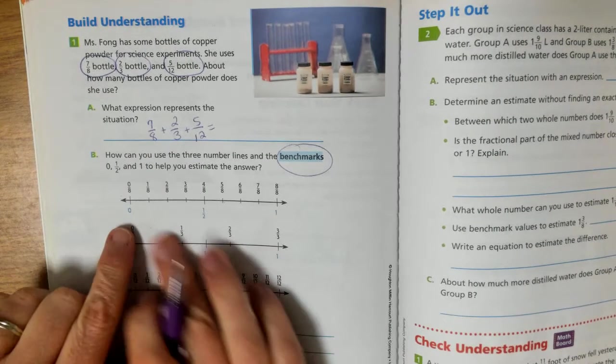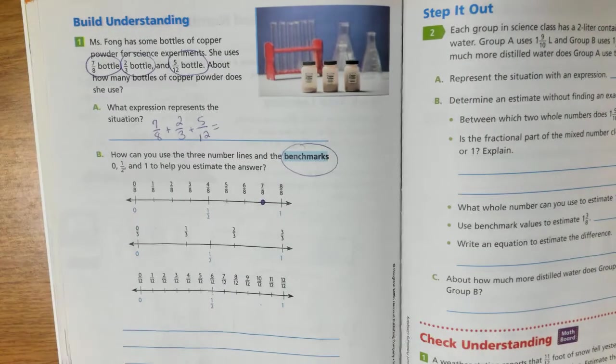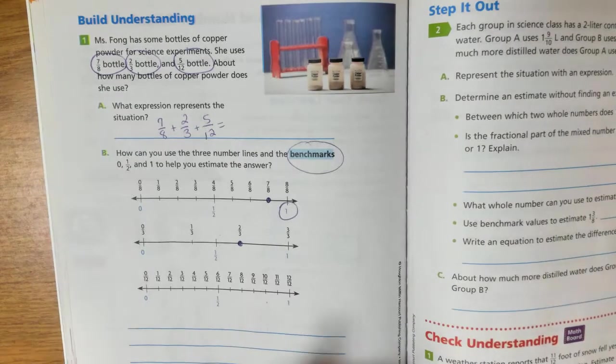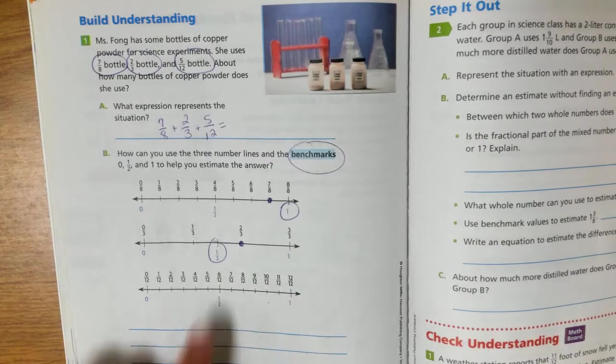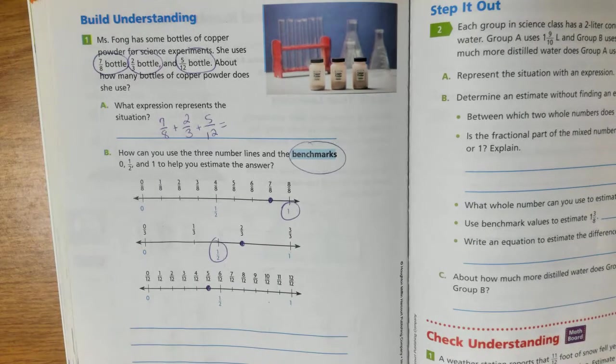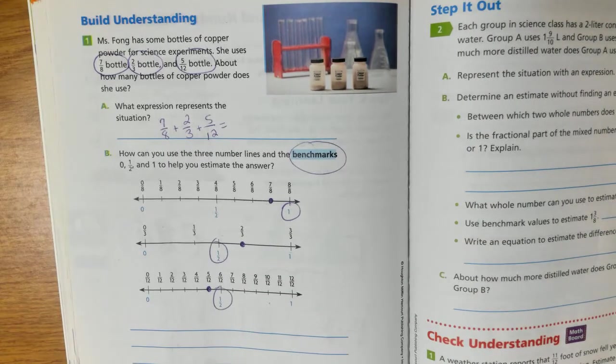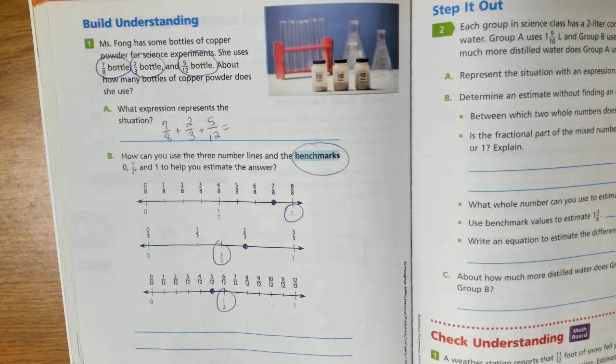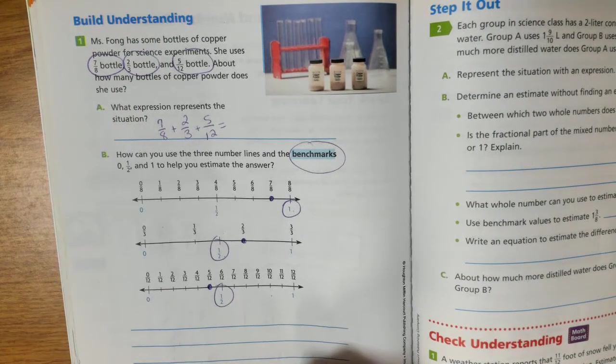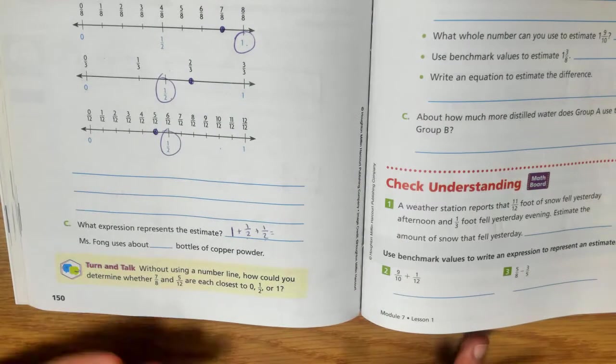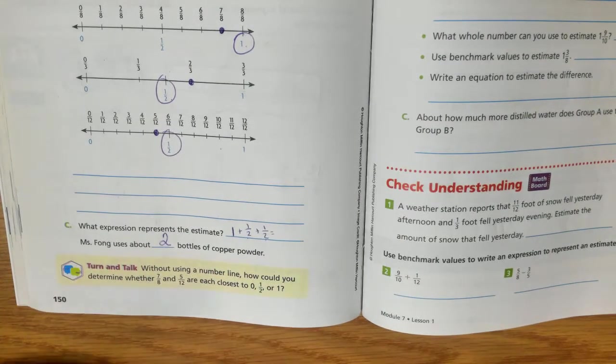So if we think of 7 eighths, 7 eighths on our number line is here. What is it closest to? It's closest to one whole. 2 thirds goes here. What is it closest to? 2 thirds is closest to one half. See how it's closer to one half, if I look here, than one whole? And then I have 5 twelfths. 5 twelfths is closest to one half. So if I have one whole, one half, and one half, about how much does she have? So we would be adding 1 plus one half plus one half. And we know that one half plus one half is one whole. One half plus one half is one whole, and one whole plus one whole is 2. So Ms. Fong uses about 2 bottles of copper powder.